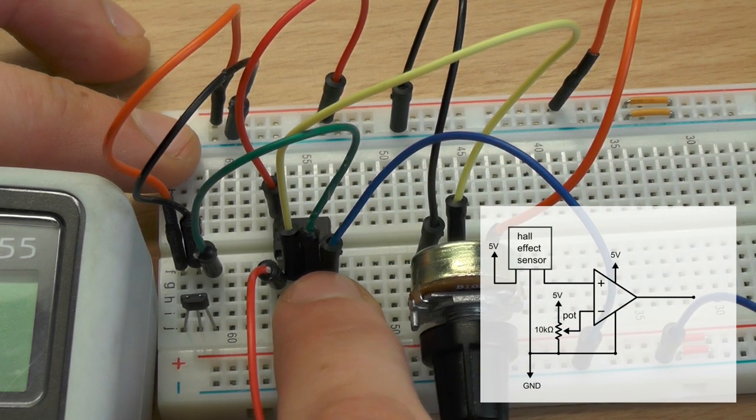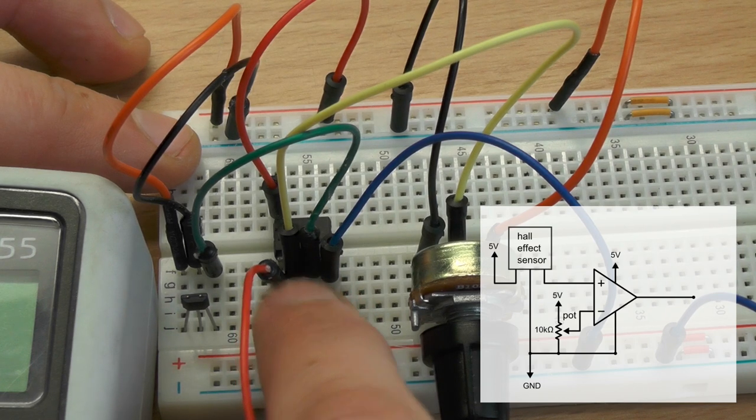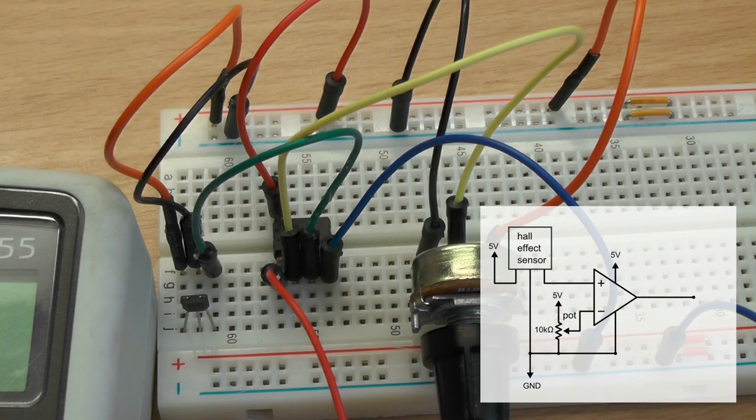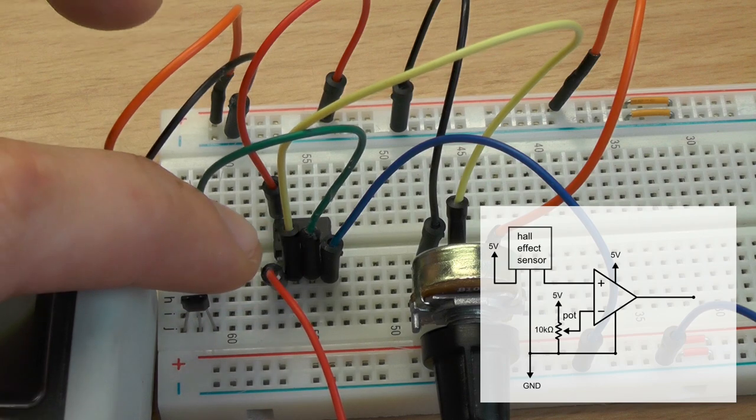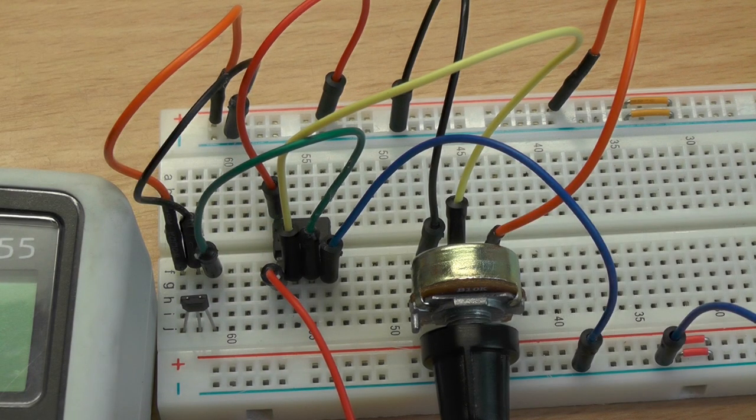So whenever the negative input is lower than the positive one we get a high value, and when the negative input is higher than the positive one we get a low value. So let's check it out.